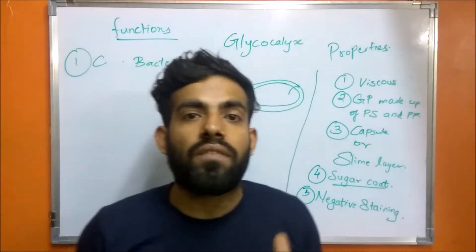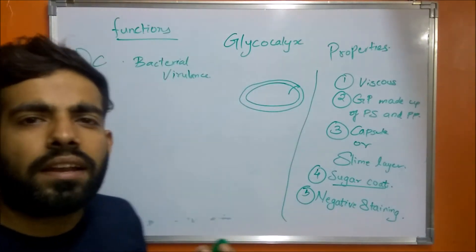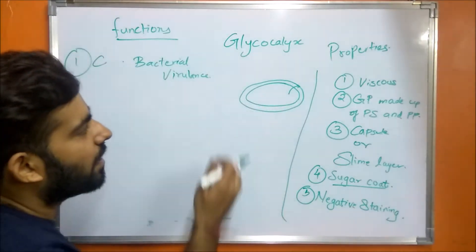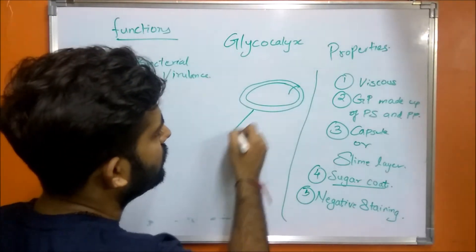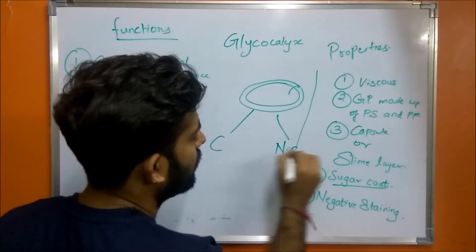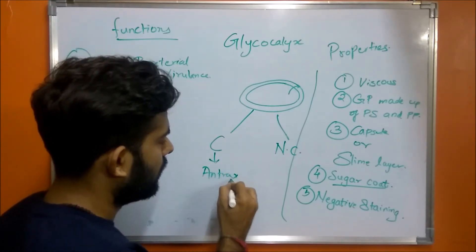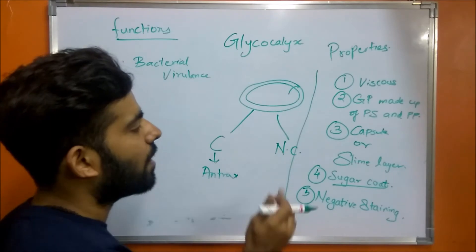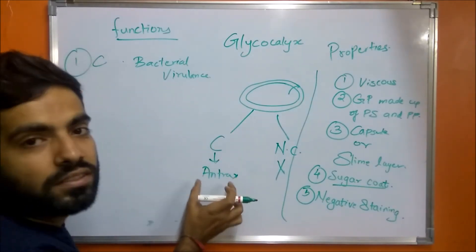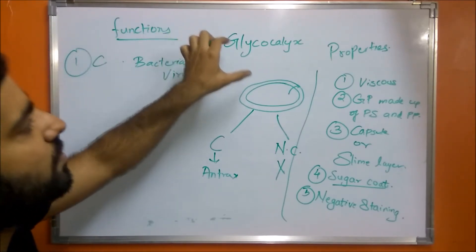Bacterial virulence means the capacity of a bacterium to cause a disease, also known as bacterial pathogenicity. For example, Bacillus anthracis is the causative agent of anthrax disease. It has two strains: one is capsulated and another does not have a capsule. The organism with a capsule causes anthrax, while the strain without a capsule does not cause anthrax. This indicates that the capsule is responsible for the disease, and thus glycocalyx contributes to bacterial virulence.